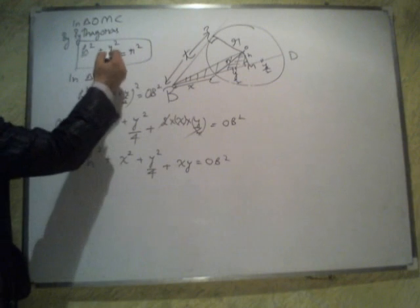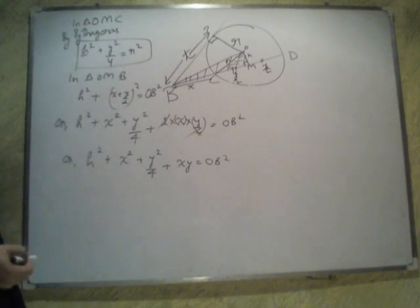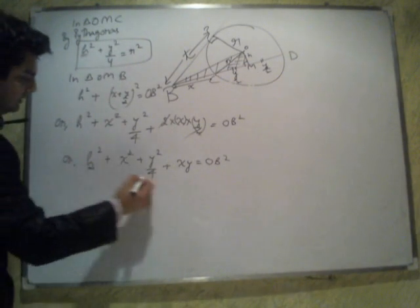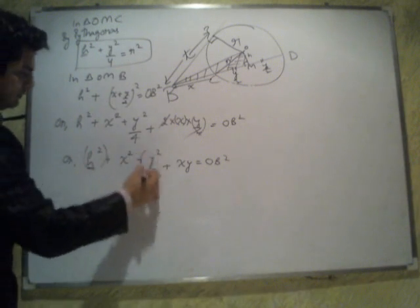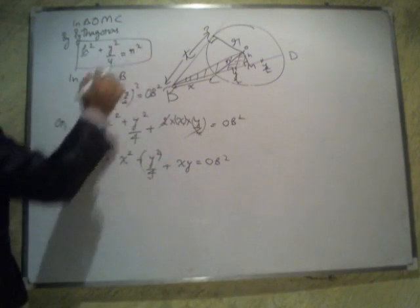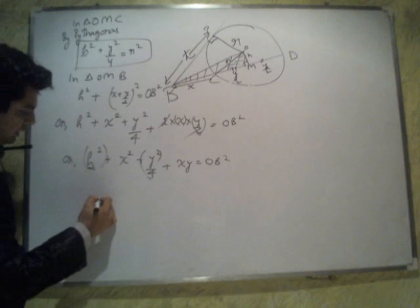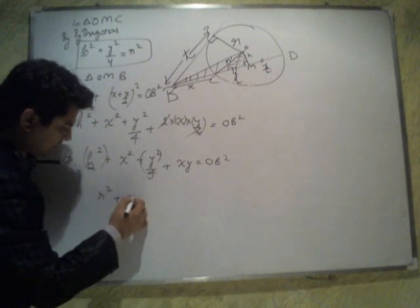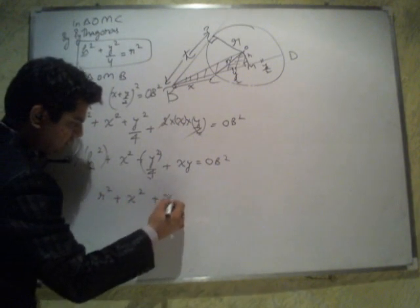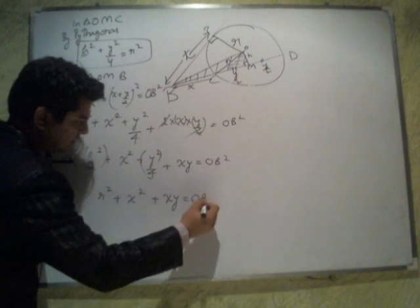Now, since H and Y, H square and Y square by 4, you don't know individually, but as a sum, you are aware of that this will give you the radius square, then you can write this as this.